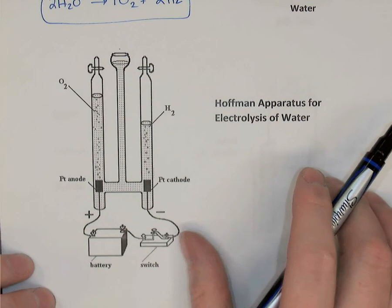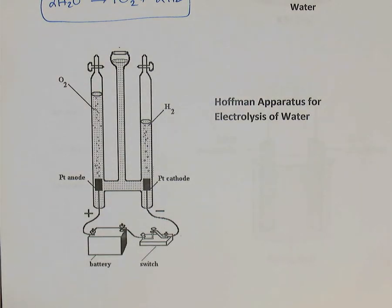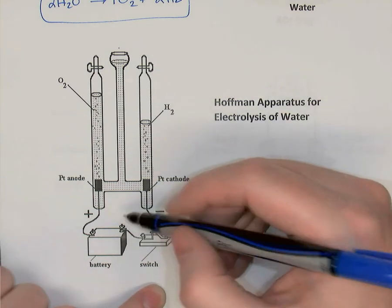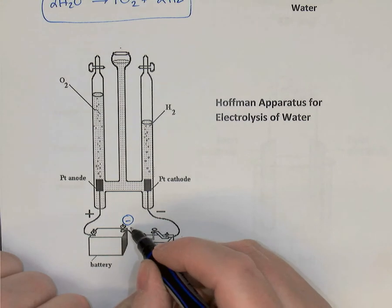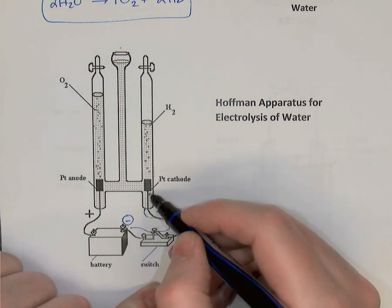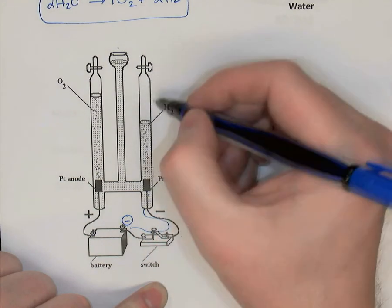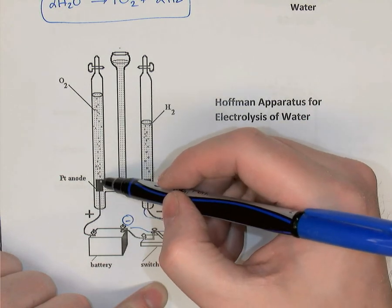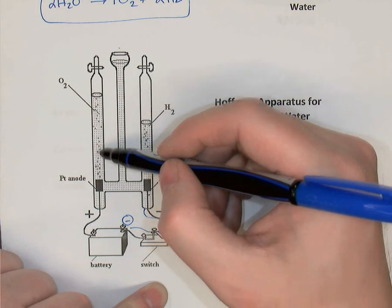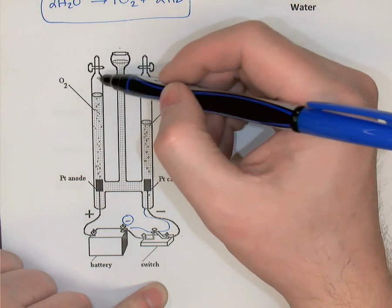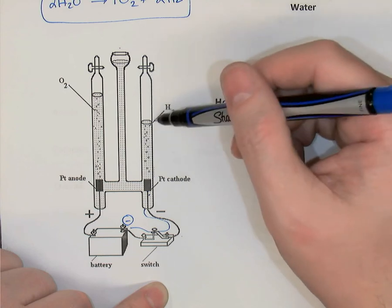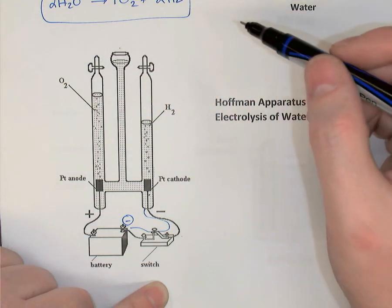The Hoffman apparatus is a special piece of equipment used for electrolysis of water. The two electrodes are at the bottom. On the cathode side, water is reduced and hydrogen gas bubbles up, collected by water displacement. On the anode side, oxidation produces oxygen which bubbles up and is collected similarly. The two upside-down burettes have stop cocks so you can release hydrogen or oxygen as needed.